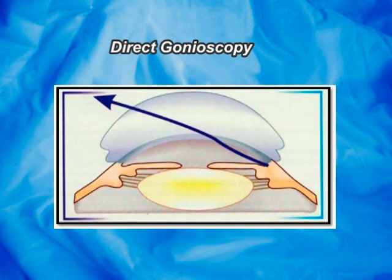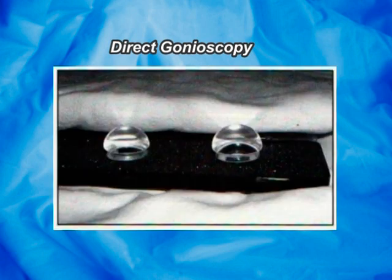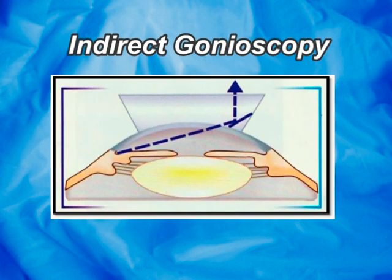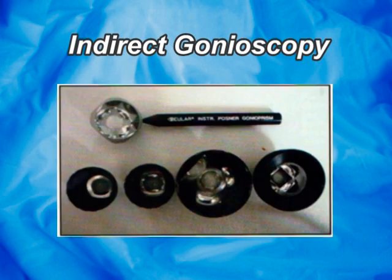There are two types of gonioscopy: direct and indirect. Direct gonioscopy means there is direct visualization of the angle and it is done by Koeppe, Swann-Jacob, and Barkan type of lenses. Indirect gonioscopy allows the observer to identify the angle structures easily, and is done by scleral and corneal type of goniolenses. The scleral type is the Goldmann type of lens, and the corneal type includes Zeiss and Posner-Schlossman.